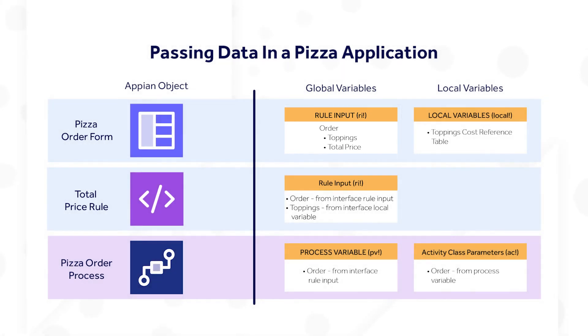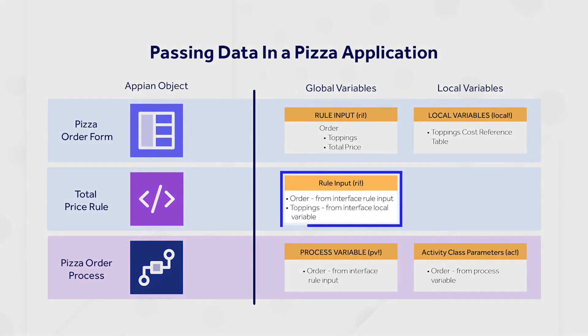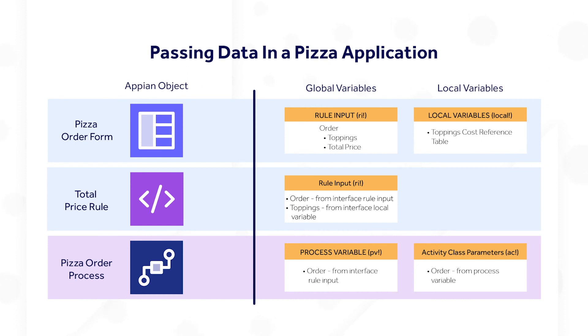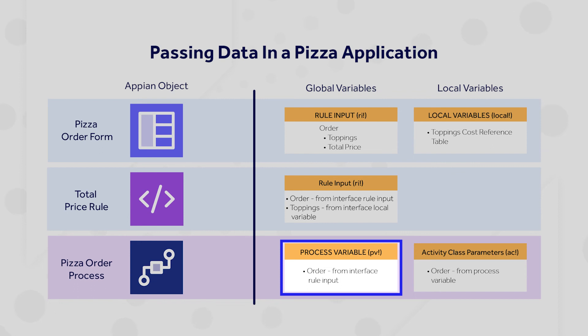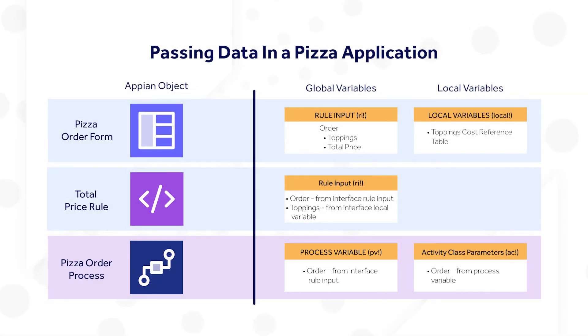The customer wants to be able to see the price change as they are making selections, so we have an expression rule that will calculate the total price. This expression rule has inputs for the order and toppings information. The interface's rule input for order will be passed as well as the local variable for toppings. The expression rule will update the price of the order as needed, based on the order's selection and the reference data's prices. Once the user submits the form, order will be passed back to the user input task and saved to the order process variable. Then the process can continue on and save the order information to the database.